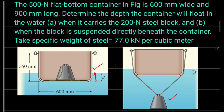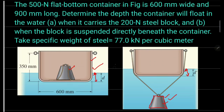In case one, the system dips by depth d. The volume displaced by this submergence must support the weight of the container plus the weight of the block. In case two, when the block is suspended below the container, it also displaces fluid, so the total buoyant force is shared between the container submergence and the submerged block. In case one, buoyant force comes only from the container submergence.